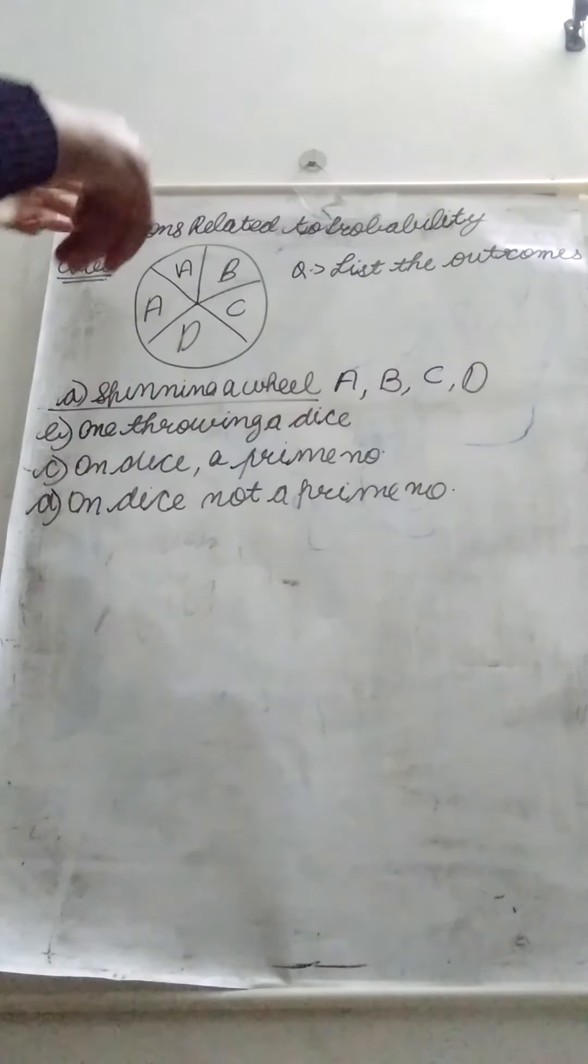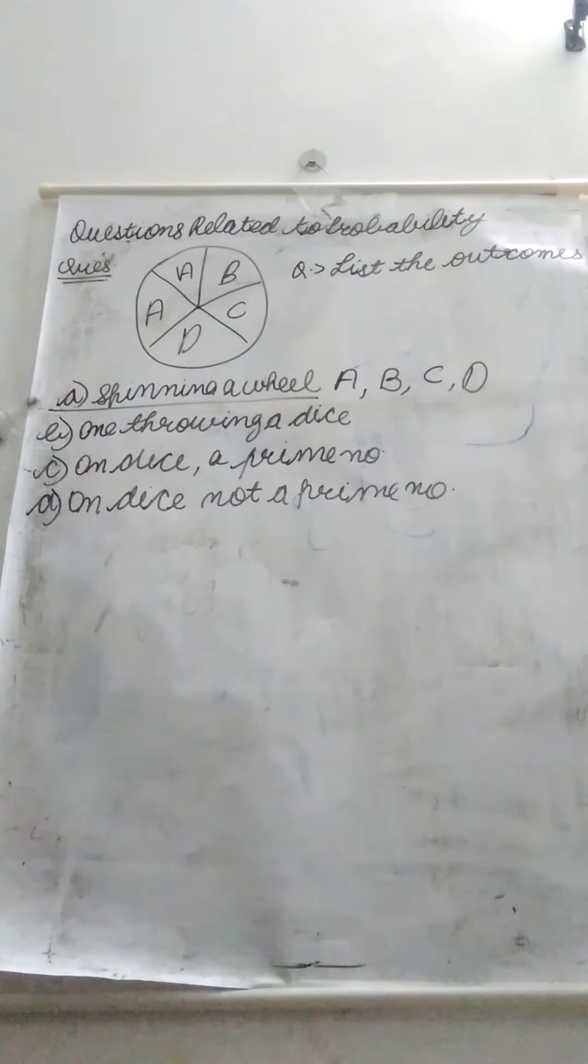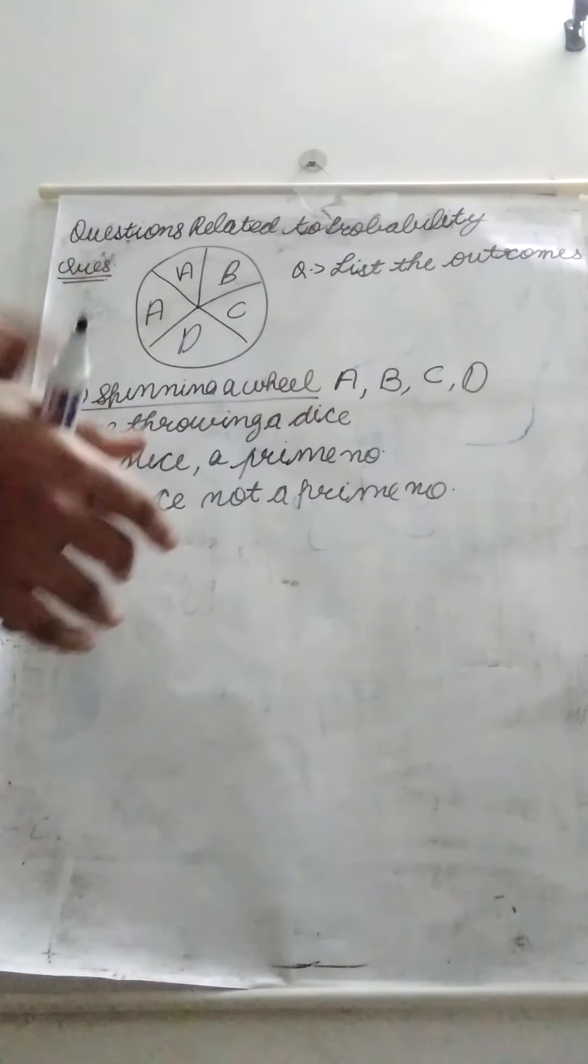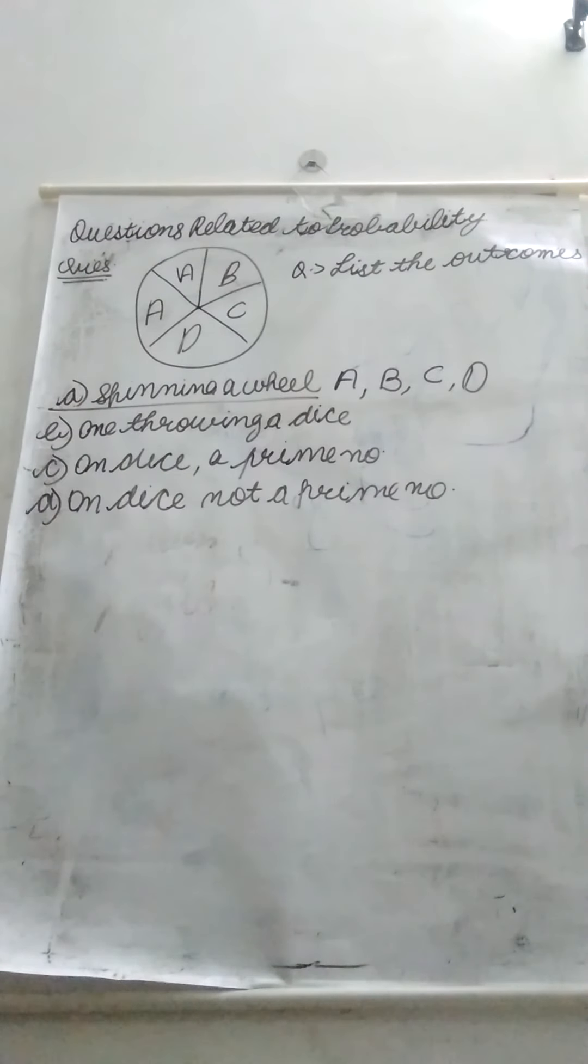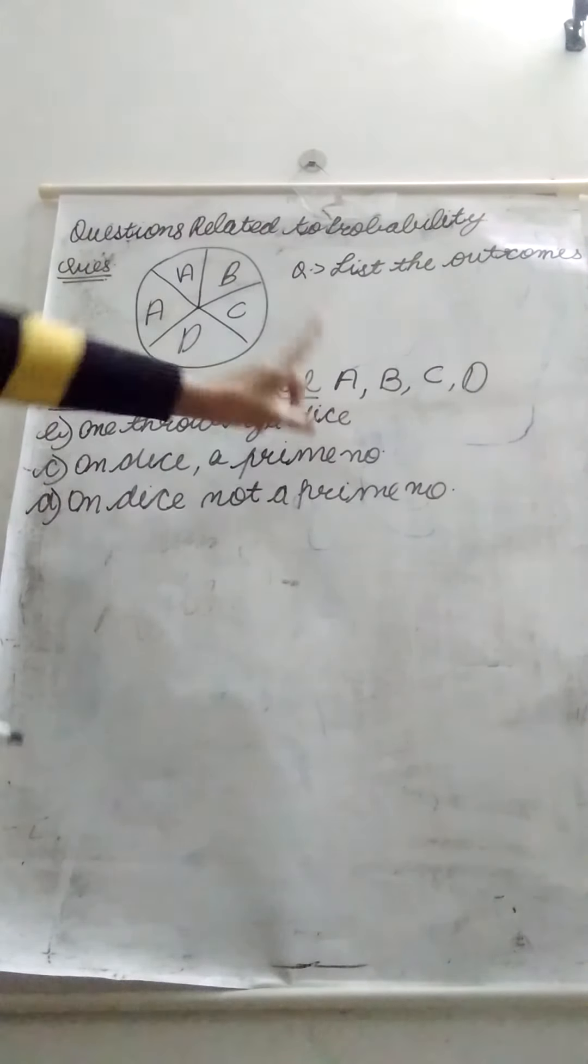Now we will ask that there are two A, but if A will come, then A will come. So we have to tell that A will come. Because the outcome is that. But when we find probability, we will include A. But when we tell the outcome, we will include A.